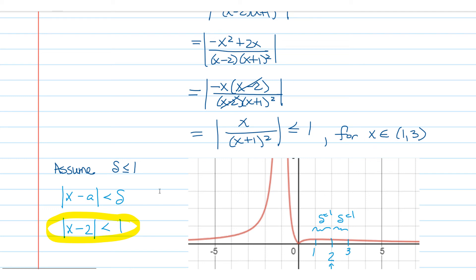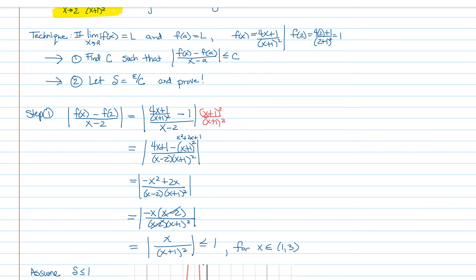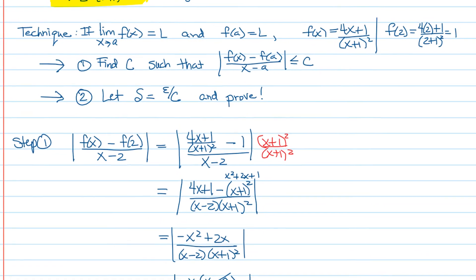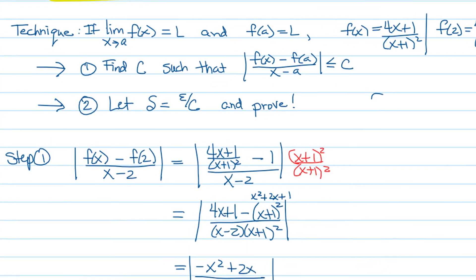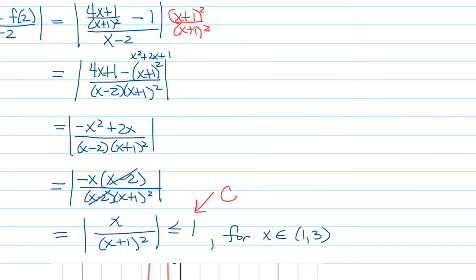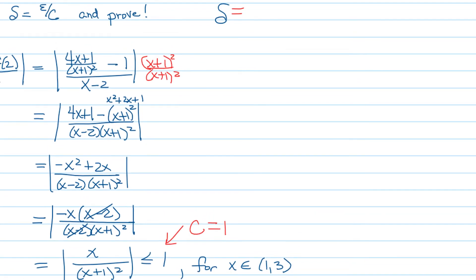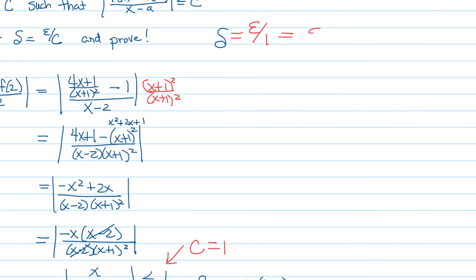Now what does that do for our proof? Step 2 in the technique is to define δ to be equal to ε/c. We found c, this is the c, the 1. So that would mean that we should let δ = ε/1 = ε in this case, but here's the problem.